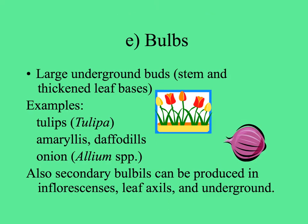Another vegetative reproductive structure is a bulb, which is made up of a tiny stem and thickened leaf bases of a plant. You can see this in tulips, daffodils, and most familiarly, an onion — the part we eat is made up of the swollen leaf bases. Bulbs often produce little bulbils at the side, like the cloves of garlic, or some plants produce them in the inflorescences and axils of the leaves, giving them better potential for dispersal to a longer distance.